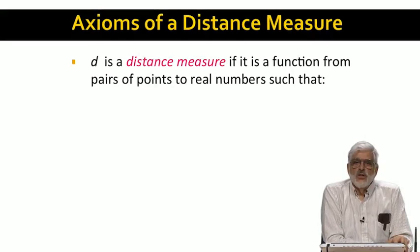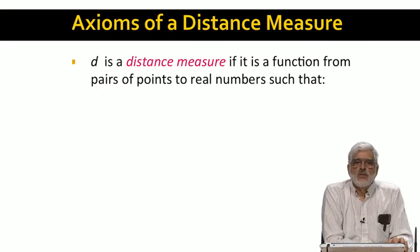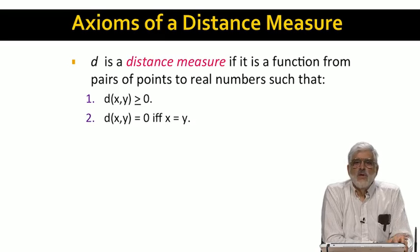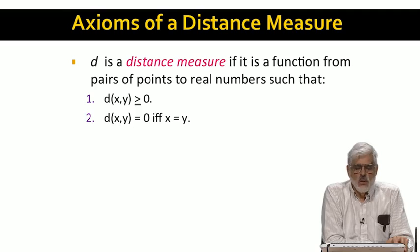A distance measure is a function from pairs of points in some space to real numbers, and this function has to satisfy four important properties. First, it never has a negative value, although the value can be zero. But the value of a distance measure can be zero under only one condition: that the two points to which it is applied are actually the same point. Moreover, whenever applied to the same point x as both arguments, the value must be zero.